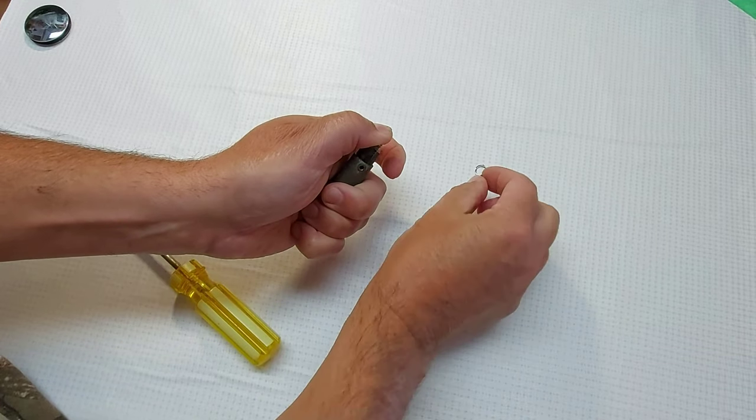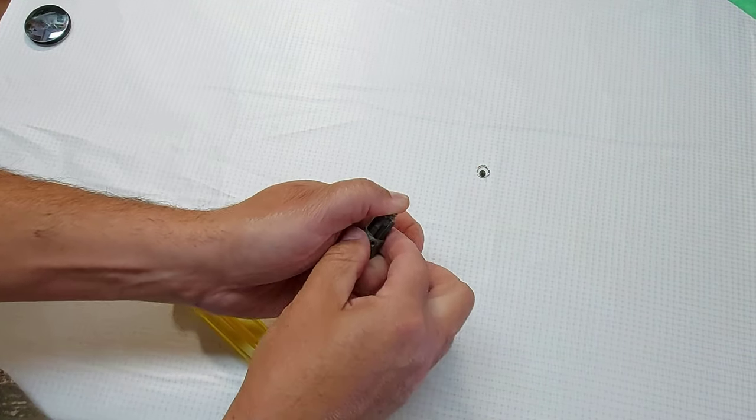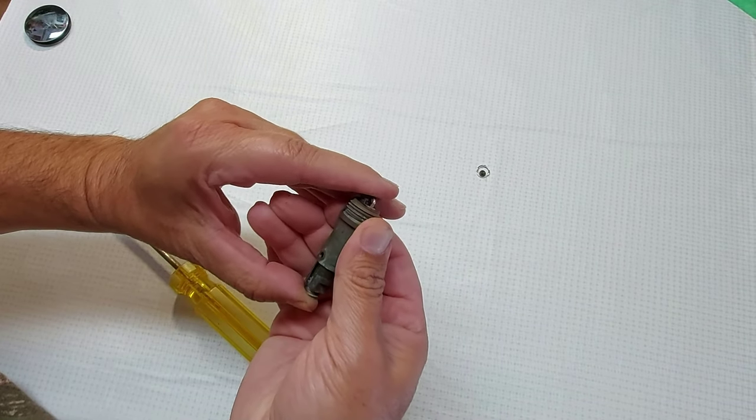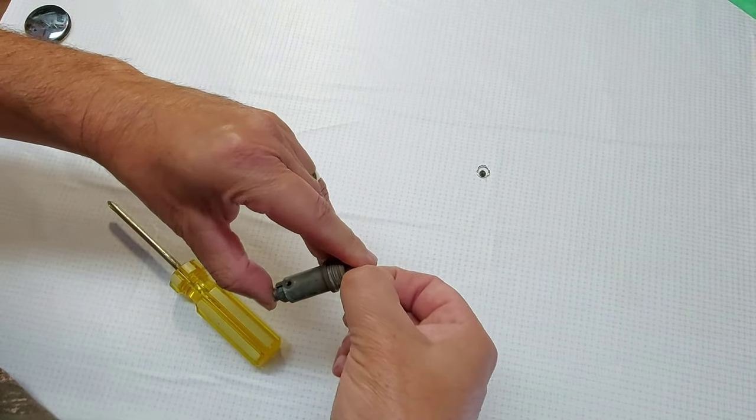We're going to set the screw aside. Be very careful because it's tiny. And over here we have a piece of metal that sits in a groove right here as well. So what we're going to do is we have to remove this.